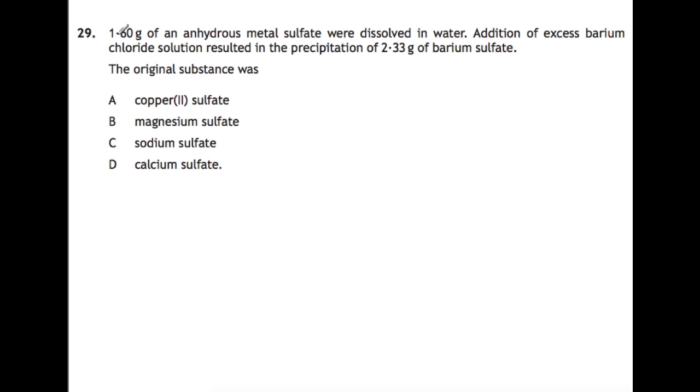Okay, question 29. 1.60 grams of an anhydrous metal sulfate - so that means there's no water attached - was dissolved in water. And we added excess barium chloride solution to get a precipitate of 2.33 grams of barium sulfate. That means that we are completely precipitating out all of the sulfate that was in the original 1.6 grams. So first of all, we are going to work out how many moles of barium sulfate we have. So barium sulfate is BaSO4. And the gram formula mass of barium sulfate quite handily is 233 grams. So moles of barium sulfate is 0.01. That also is going to be the same as your moles of sulfate that you had in your original sample.